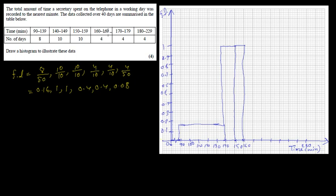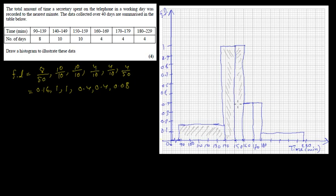Now we have the bar up to 169, meaning up to 170, and this height is 0.4. Then 179.5, which is approximately 180, with a height of 0.4. Then the final bar goes to 229.5, close to 230, with a height of 0.08 — which is going to be less than 0.1. So this is the completed histogram.